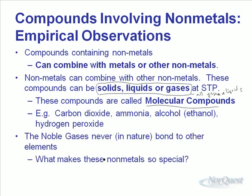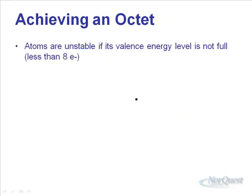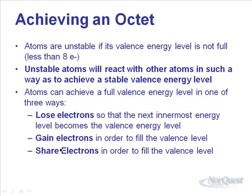Noble gases never bond to other elements — this is what makes them so special. They already have a full valence energy level, and other elements want the same thing. Their goal is to achieve an octet — a full valence energy level. There are three ways to do it: you can lose electrons, you can gain electrons, or you can share electrons, all in order to fill that valence energy level.